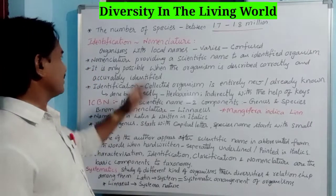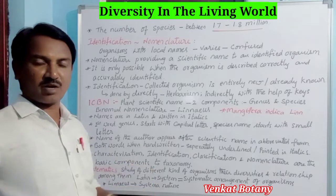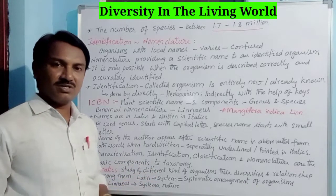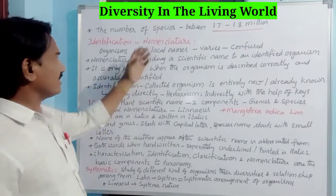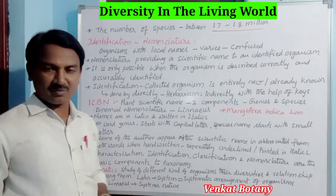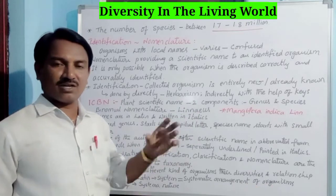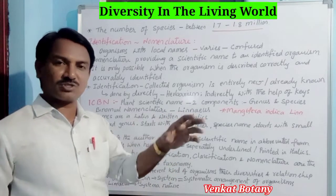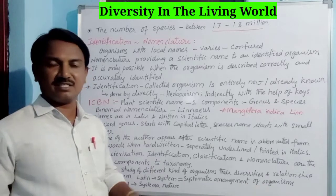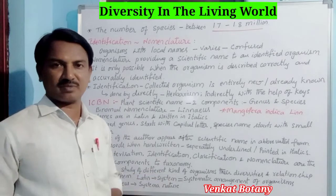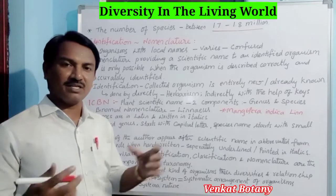Different organisms with the same species may have a number of local names. They will have different names at different locations — local names vary greatly. They are very different and various, causing a lot of confusion. So, to remove this confusion, we use nomenclature.